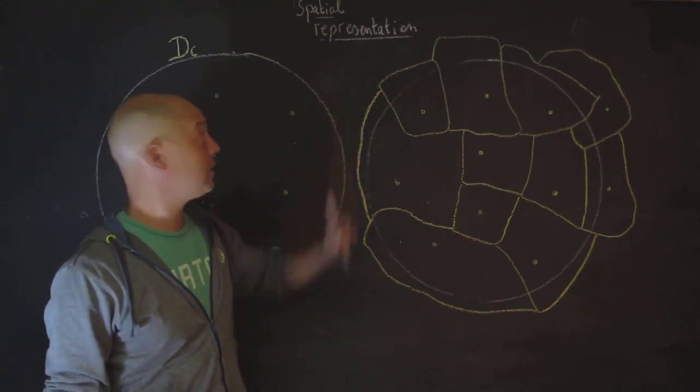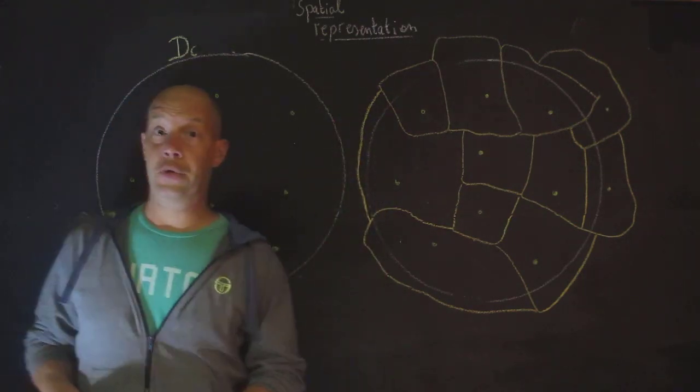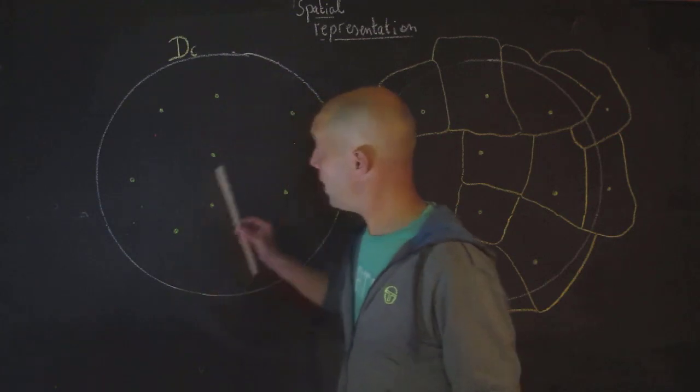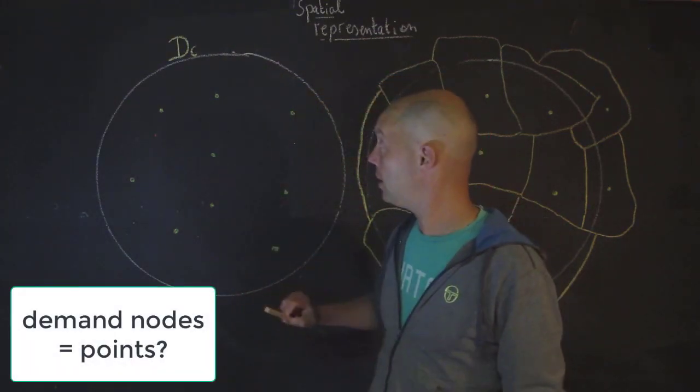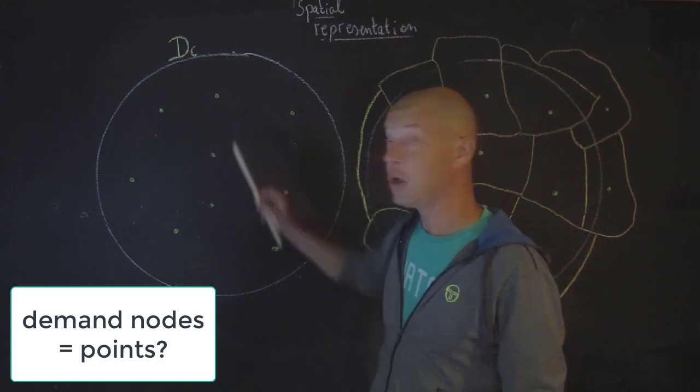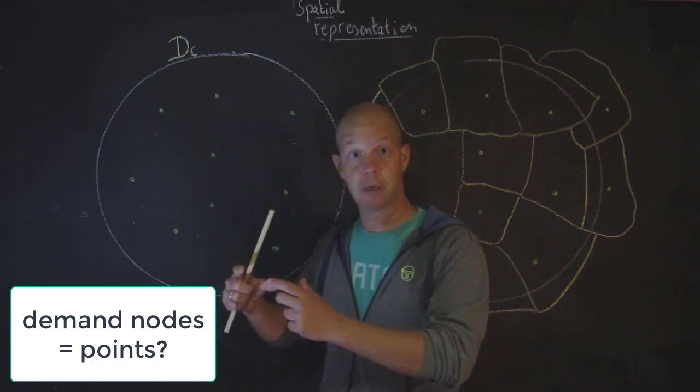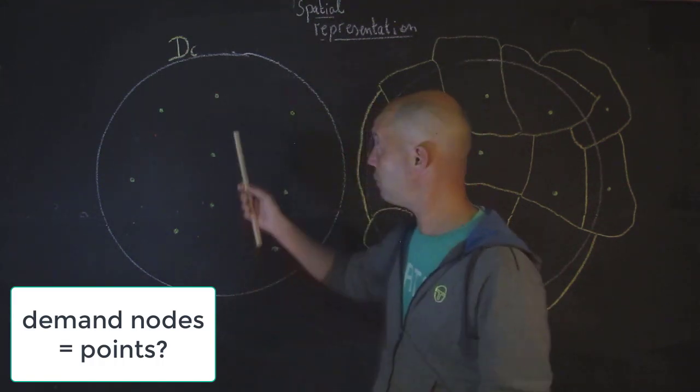Hello again! Today I'm talking about spatial representation. In Coverage Manual, we have made the assumption that every demand originates at points. Now, these points could represent the centroid of geographic units, but so far we have used points.